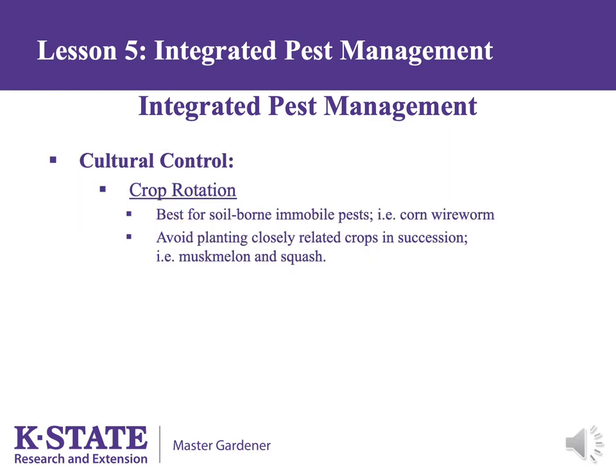Cultural practices help us avoid pest problems. Crop rotation means that closely related plants are not planted in the same spot year after year. For example, broccoli, cabbage, and cauliflower are so closely related that pests attacking one will likely attack the others. Planting cabbage where broccoli was grown the previous year will not help. Crop rotation works well for soil-borne and mobile pests such as corn wireworm, and can help prevent diseases such as septoria leaf spot and early blight on tomato.